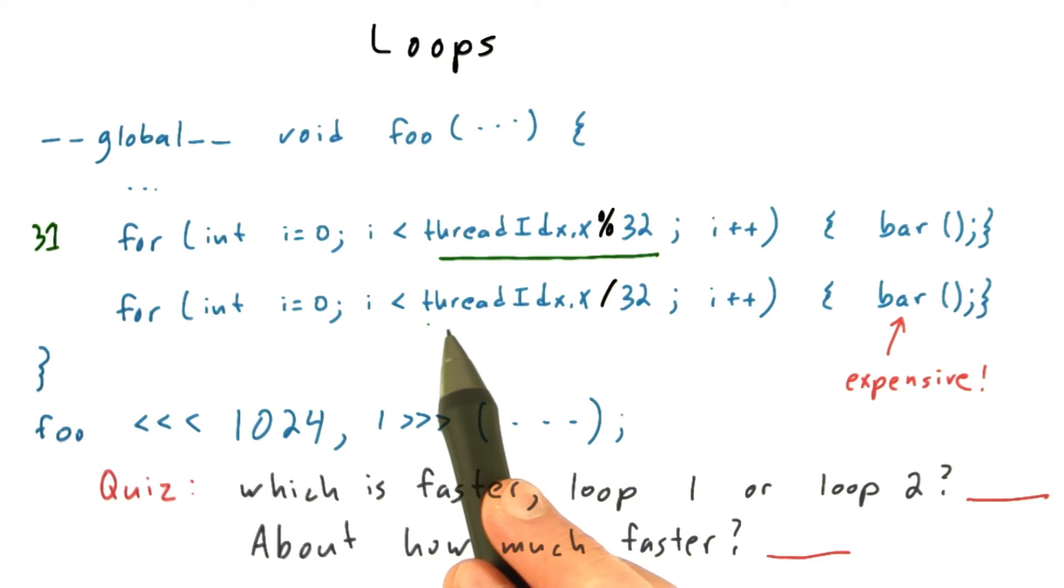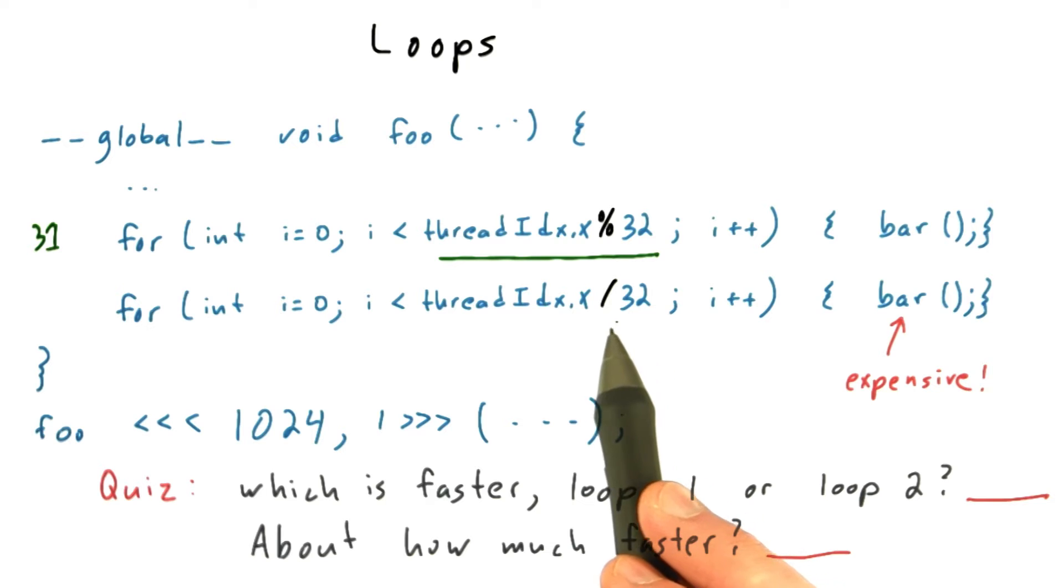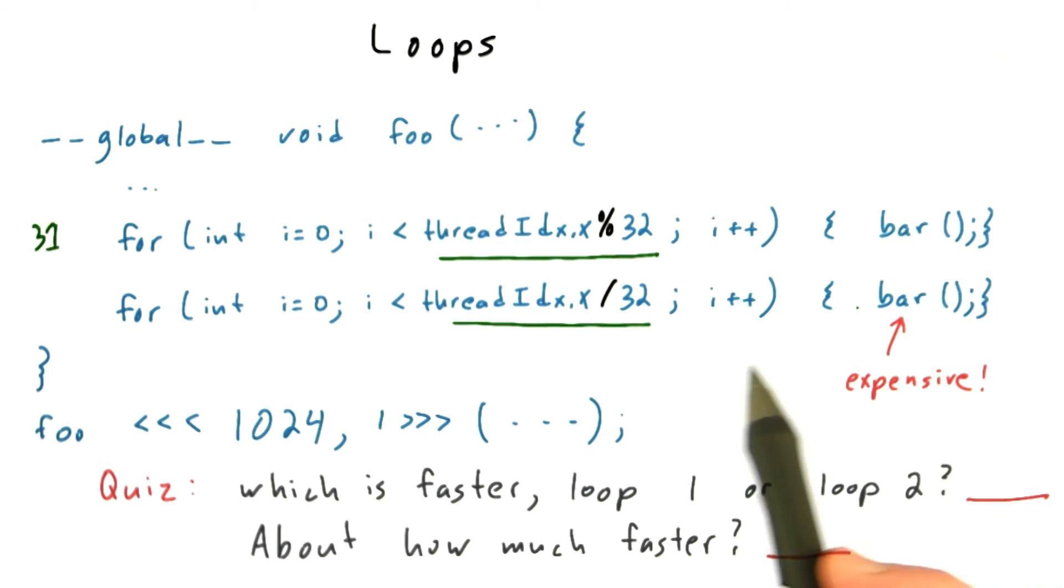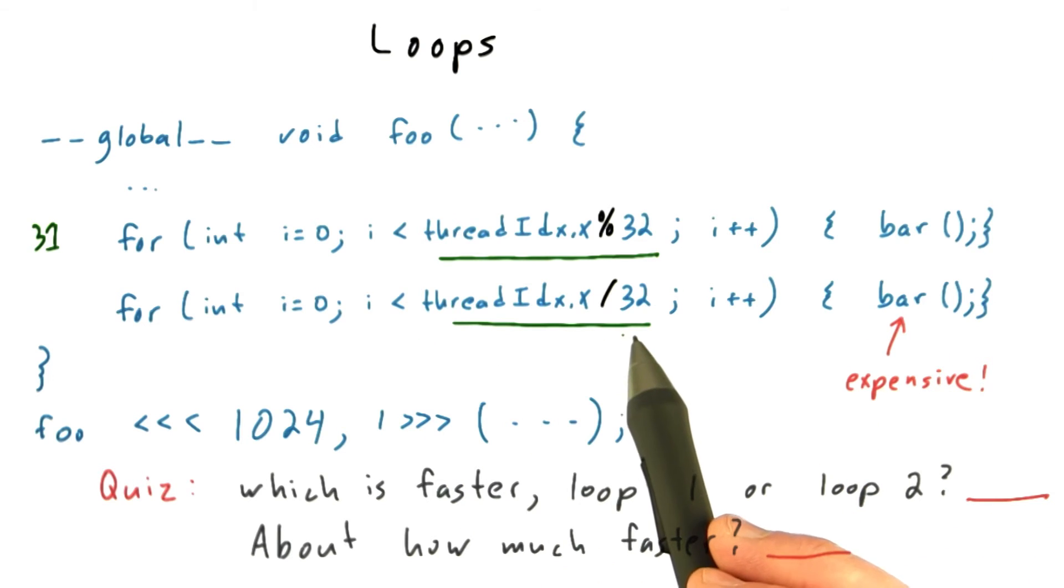This next loop, though, is different. In this case, the integer divide means that threads 0 through 31 are going to evaluate to 0. This expression will evaluate to 0. And therefore, they're not going to execute the bar function at all. And threads 32 through 63 will evaluate this expression to 1, and they'll execute the loop once, and so forth.